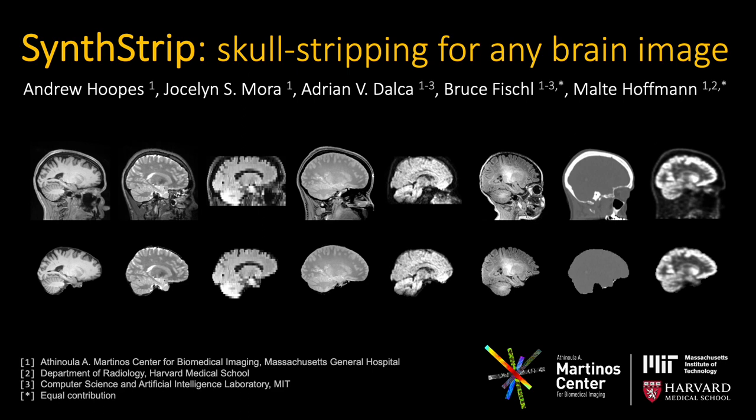In this presentation, we introduce a robust and flexible skull-stripping tool called SynthStrip, which can rapidly remove all non-brain matter from a landscape of 3D image types that range across modality, contrast, resolution, and subject population. We make use of a learning-based strategy that involves generating a vast array of synthetic whole-head training data to optimize a neural network that is completely agnostic to the contrast of real images.